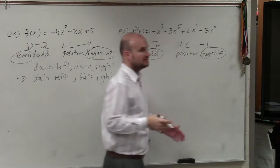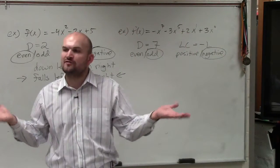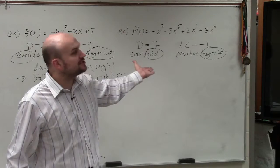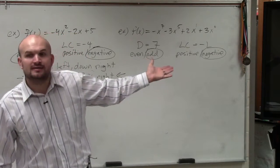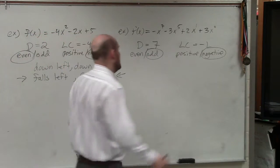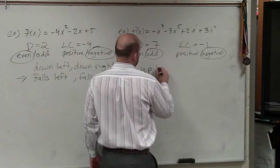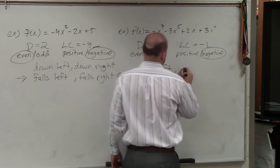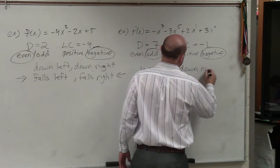So we go back to our little chart and we say, all right, what is the behavior of all graphs that have an odd degree and a negative leading coefficient? And that is, they are going to go up to the left and down to the right.